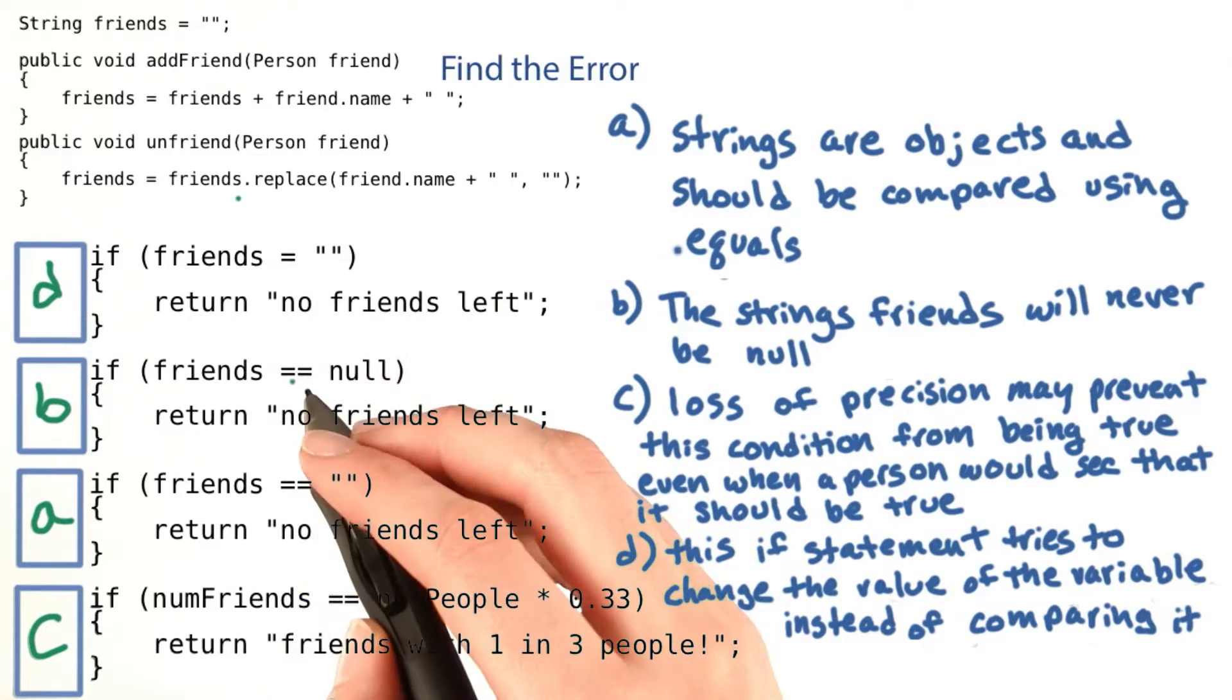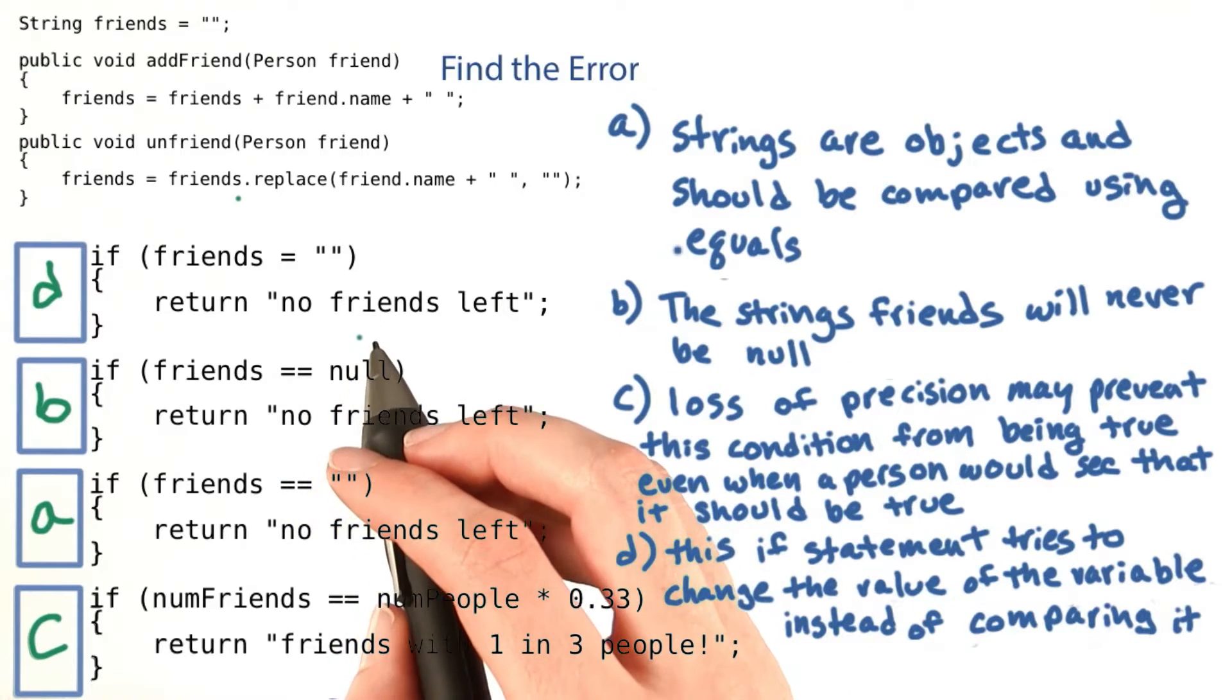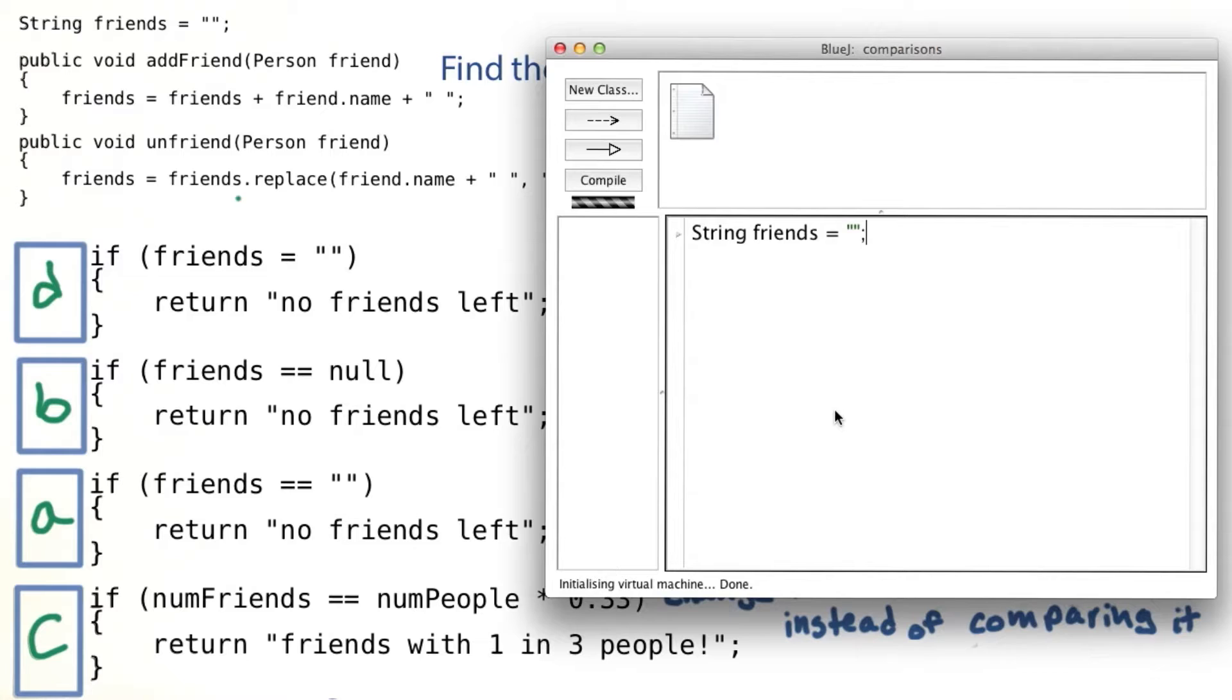Using equals instead of equals equals or dot equals is an easy mistake to make. This won't compile. If I create a string friends and set it equal to the empty string, and now if friends is the empty string, and I'm going to use shift enter to go down a line without running it, then I'll print out no friends left.